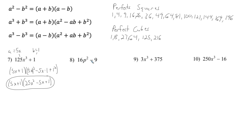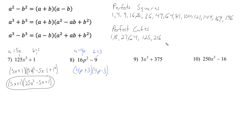Number 8: 16p squared minus 9. There are no common factors. Both 16 and 9 are perfect squares, so this fits the difference of squares. What squared gives 16p squared? That's 4p, so a equals 4p. What squared gives 9? That's 3, so b equals 3. The answer is (4p + 3)(4p - 3).